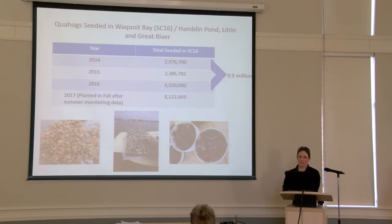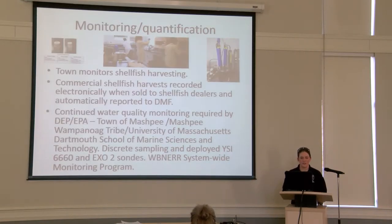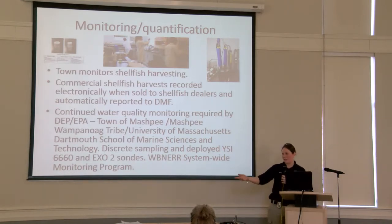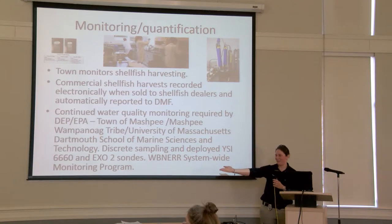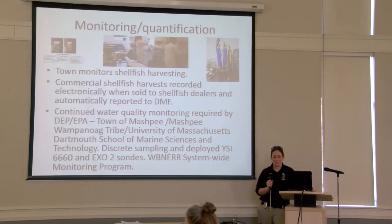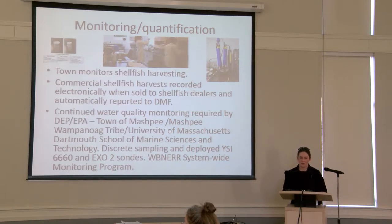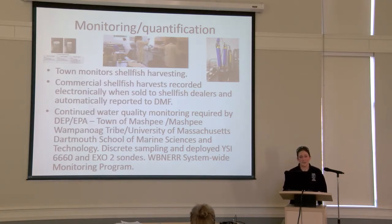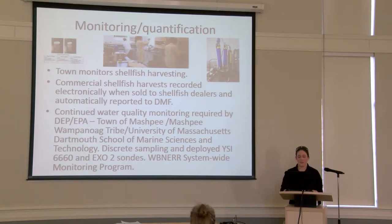After all this planting, we need to monitor what they're actually doing to the water and how well they're cleaning up. The town has deployed EXO units that can measure dissolved oxygen, chlorophyll, total suspended solids, and turbidity — all the parameters that can be affected by the quahogs. We collect this data and it goes to the School of Marine Science at UMass Dartmouth. We also take grab samples to test for total nitrogen. In 2017 we were able to see positive results in Wakoyet Bay, Hamlin Pond, and Little River — our seeding efforts are really doing what they're supposed to be doing.